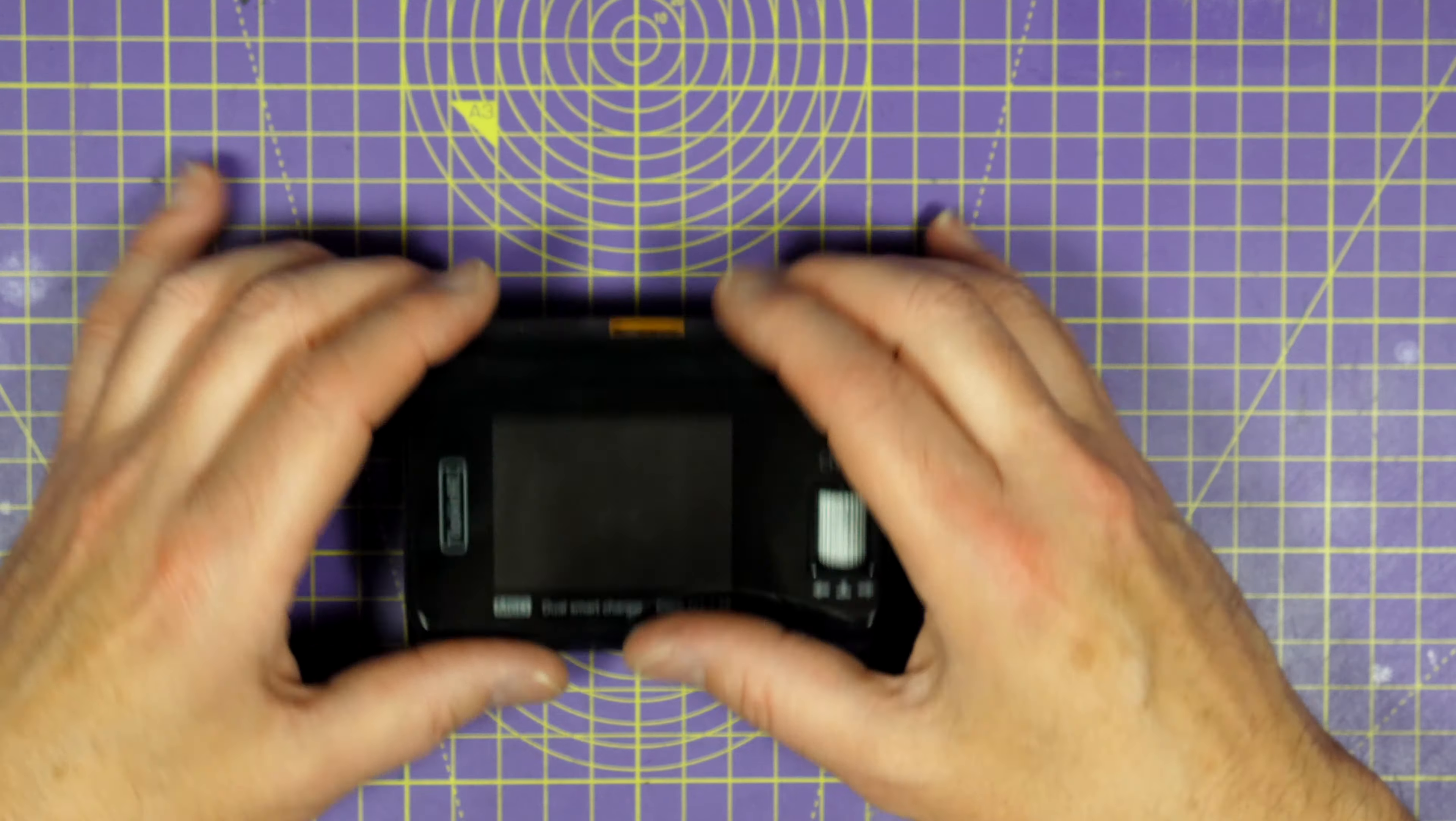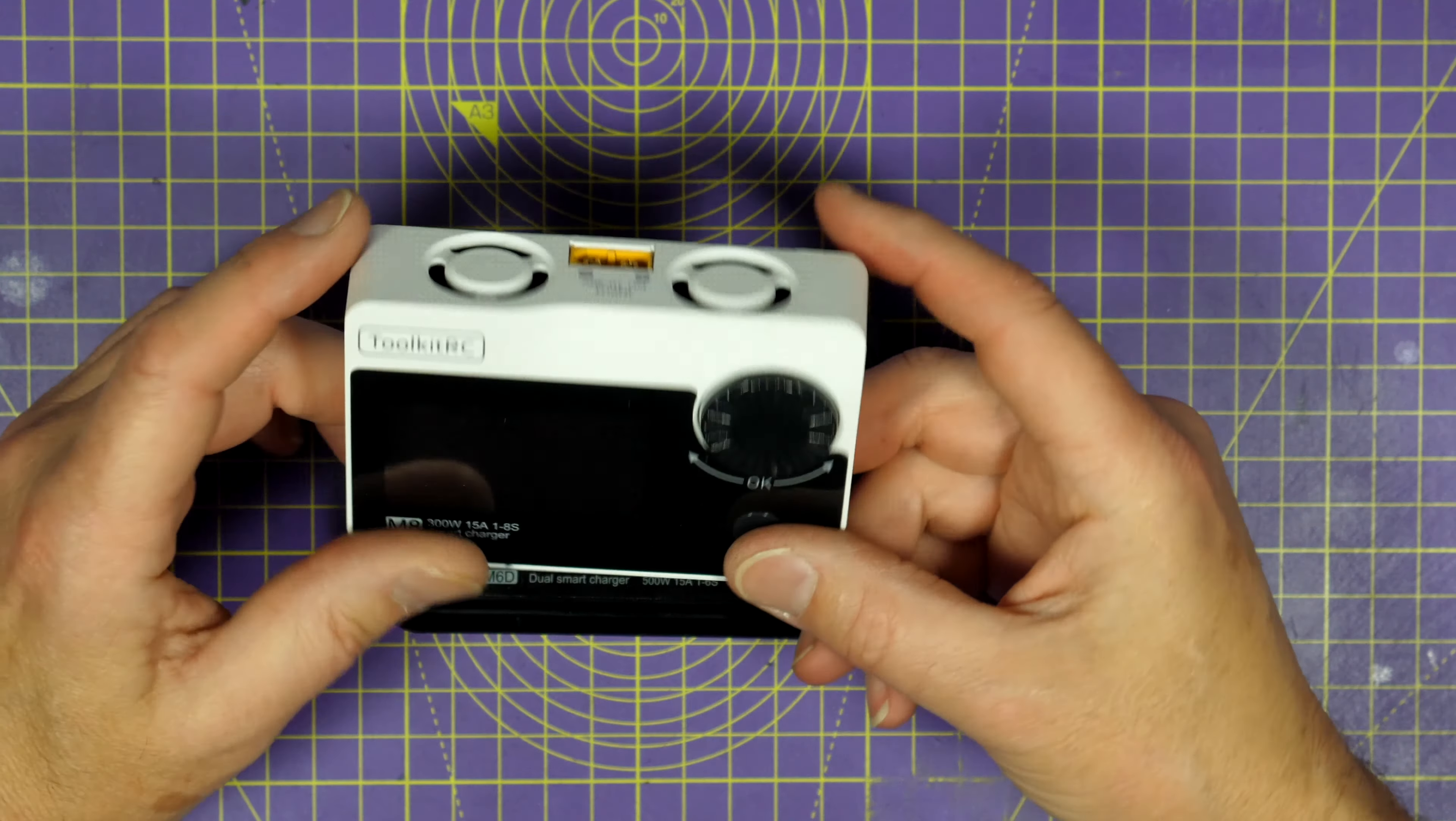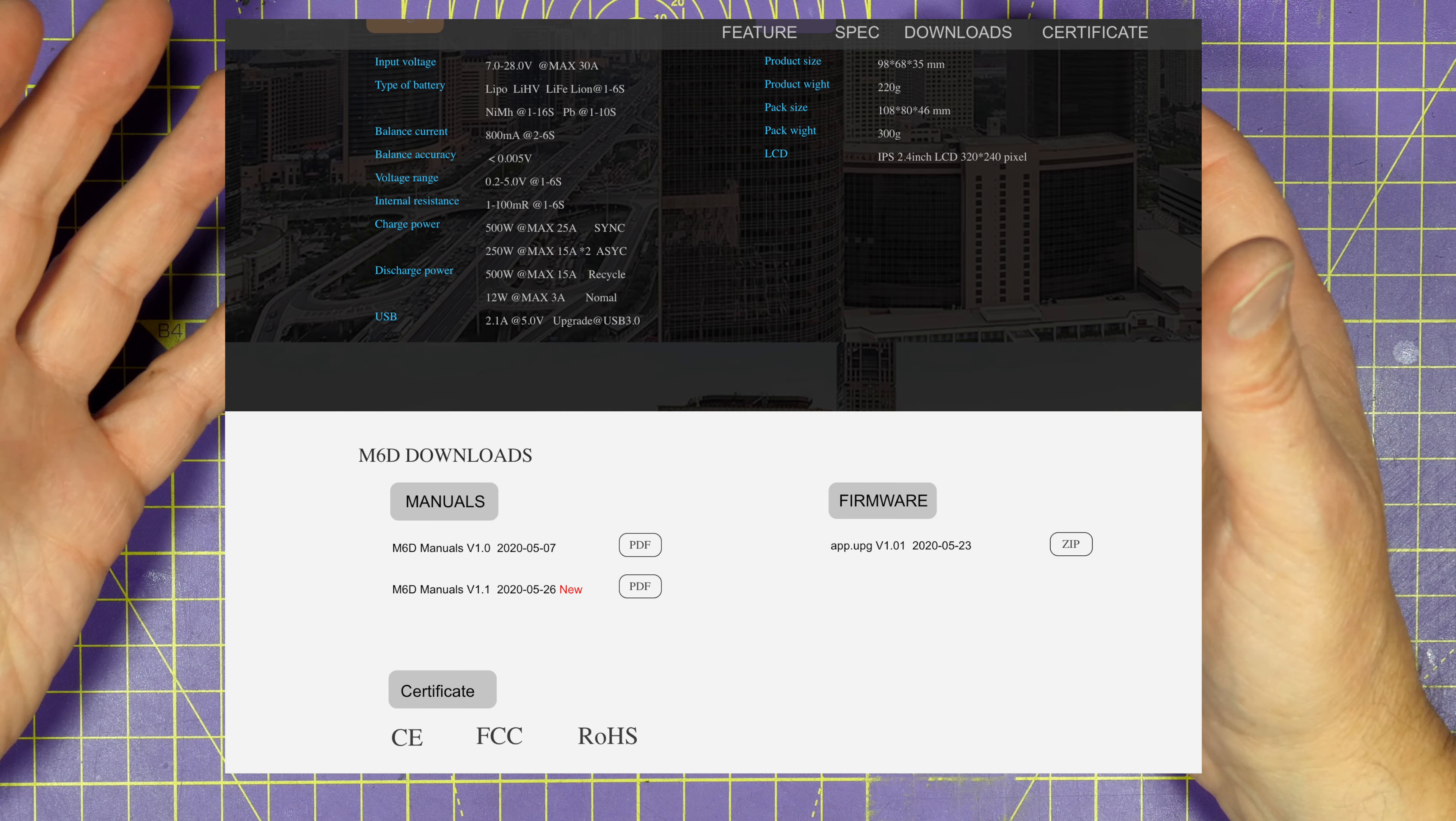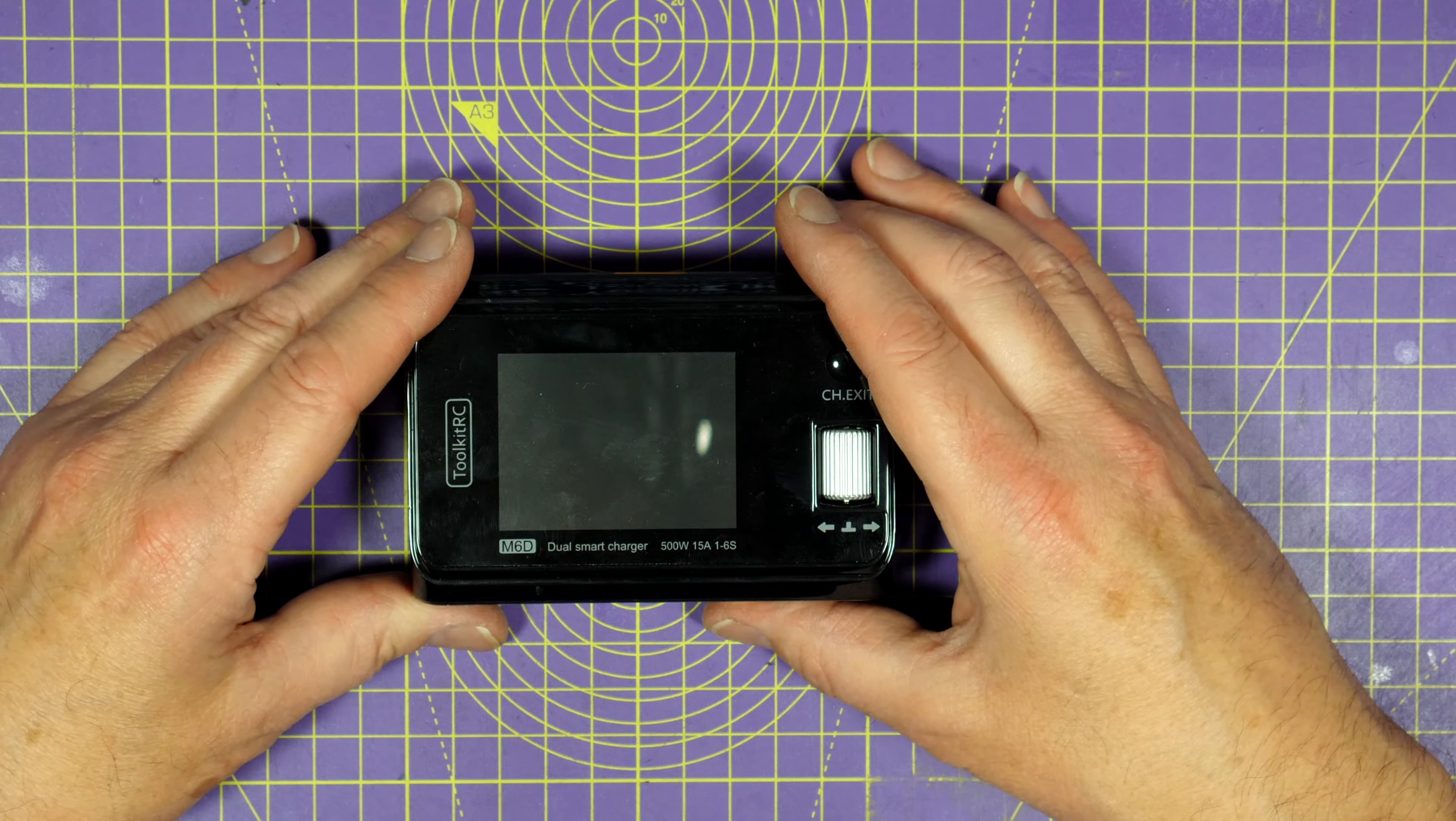But the USB is there so that you can update the firmware. And I've updated the firmware on my M8 before and Toolkit RC make updating firmware really easy. You just download a file from their website, plug the charger into your PC with the USB connector and it will appear as an external drive. You just drag and drop the file onto it and it's done. Totally painless.